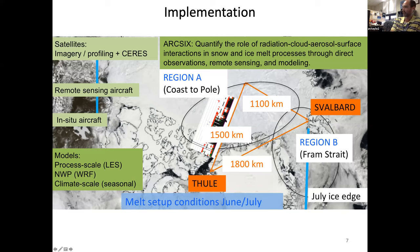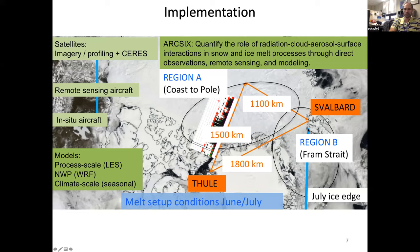ARC-6 has science questions and objectives relating to cloud life cycle processes, the role of aerosol advection and transport events on clouds, surface energy budget, and improving satellite remote sensing and model evaluation. The primary base is Thule, with flights toward the North Pole to sample gradients. A secondary region in the Fram Strait would focus on transport events and surface-atmosphere interactions, with possible suitcase-style flights between Thule and Svalbard over two days.